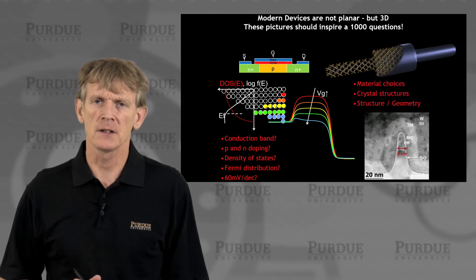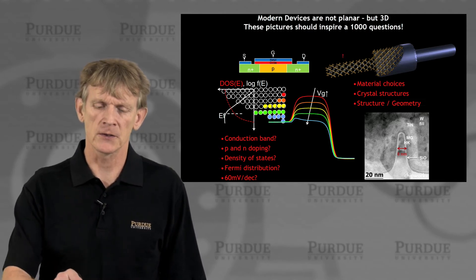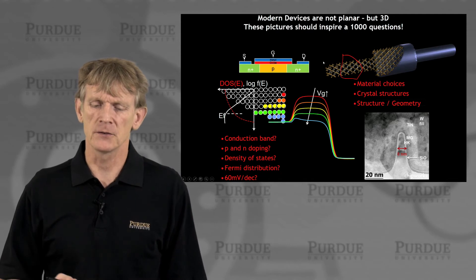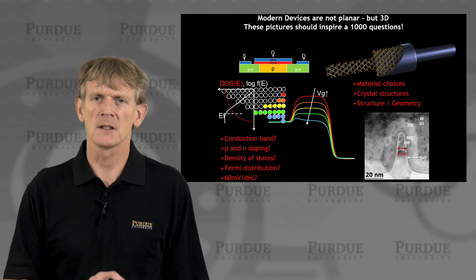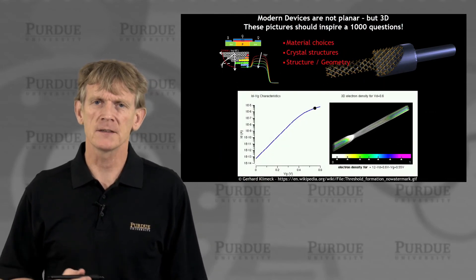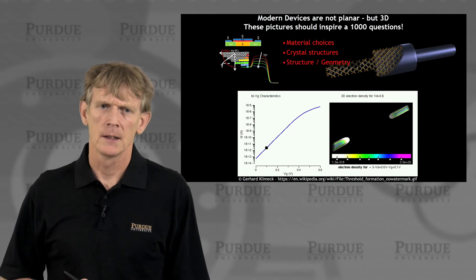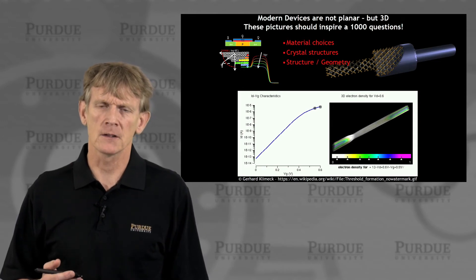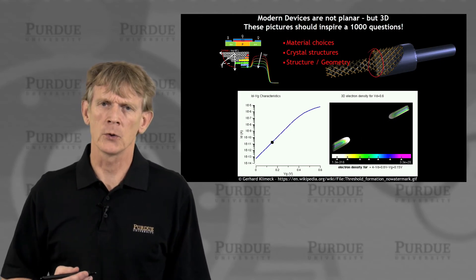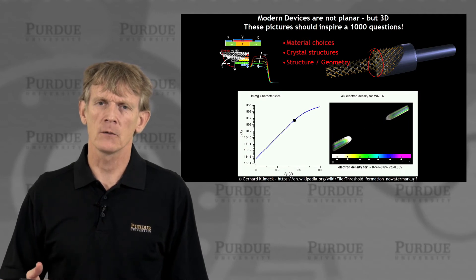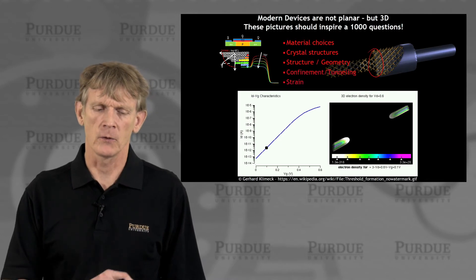We really started out from material choices — we dealt with crystals. In these modern devices we need to deal with crystal symmetries, structures, geometry, and strain. These devices are ultimately also three-dimensional and nanoscaled. We will not cover a full quantum mechanical treatment of a nanowire, but you will be well on the way to understanding these devices in a quite fundamental way.